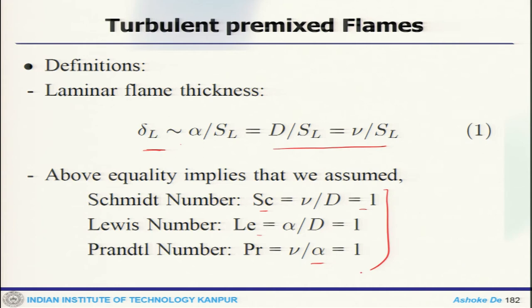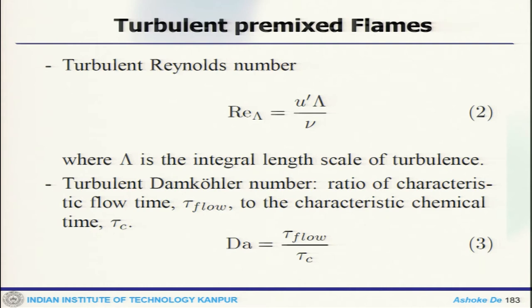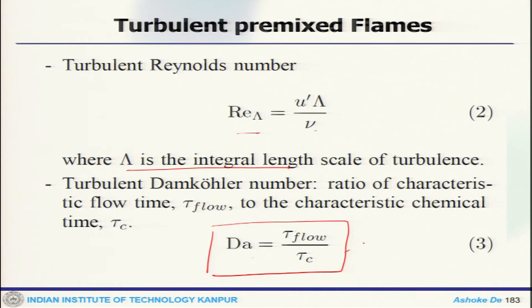Now, one important definition required is the turbulent Reynolds number, defined as u-prime times lambda divided by nu, where lambda is the integral length scale of the turbulence. The turbulent Damköhler number is the ratio of the flow time scale to the chemical time scale. This will dictate which one is dominating — whether the flow is dominating or the kinetics is dominating. The Damköhler number plays an important role and one can distinguish different flame zones through that.